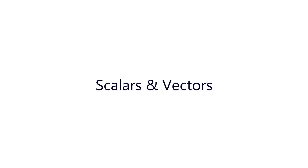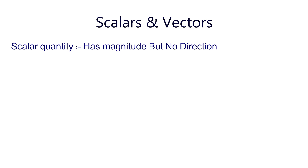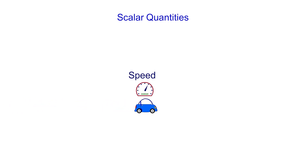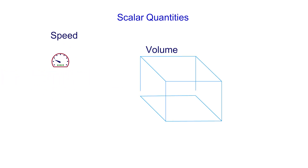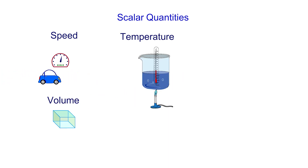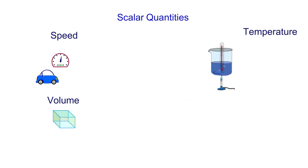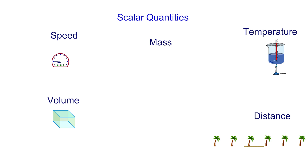Scalars and Vectors. Physical quantities can be categorized into two main quantities: vectors and scalars. A scalar quantity can be defined as a quantity that has magnitude but no direction. Examples of scalar quantities include speed, volume, temperature, distance, and mass.